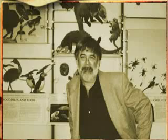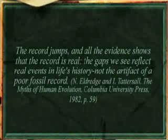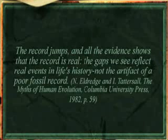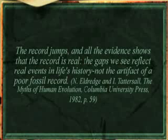Niles Eldredge, the famous Harvard University paleontologist, expresses the invalidity of Darwin's claim that the reason why no transitional forms have been found is the insufficient fossil record: 'The record jumps, and all the evidence shows that the record is real. The gaps we see reflect real events in life's history, not the artifact of a poor fossil record.'